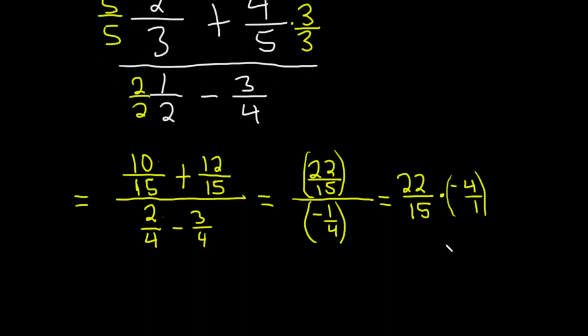And now we just multiply straight across. 22 times four is 88, so it's negative 88 over 15. And that would be the final answer to this interesting problem where we had to clean up these fractions. Hopefully you've learned some mathematics along the way. Take care.